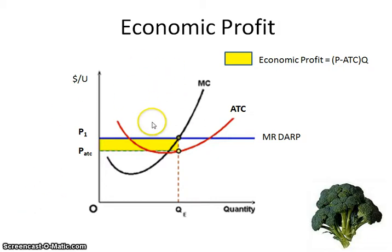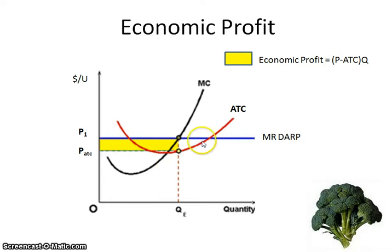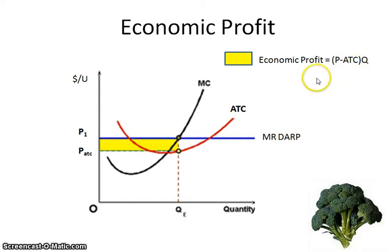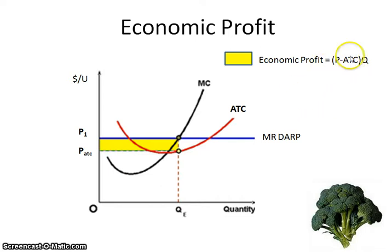We don't have the total revenue and the total cost curves here, but we can still figure out economic profit by using the price, or MR — that demand curve — and also using the ATC curve. The formula you need to know for economic profit is price minus ATC times quantity. Total revenue is price times quantity, and total cost is quantity times ATC, so it's total revenue minus total cost using the curves we have here.